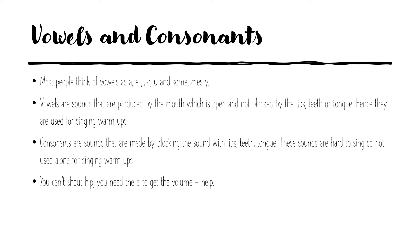Consonants are hard to sing. You can't sing the letter T — T-t-t-t-t doesn't sing. Alone we won't use those for warm-ups, but we might learn ta-ta-ti-ti, adding a vowel to them. Interestingly, you can't shout a word if it doesn't have a vowel in it. So if you shout 'help' but without the E sound — 'Hoop!' — it gets really hard to shout. But if you're really needing help and you want to shout it, put the E back in: 'HELP!' And now you can shout it really loud — much easier than 'Hoop!', which doesn't shout very well.